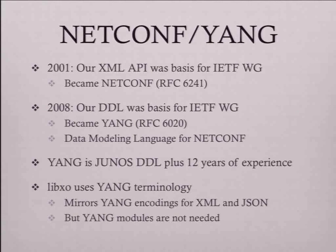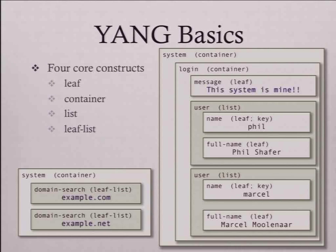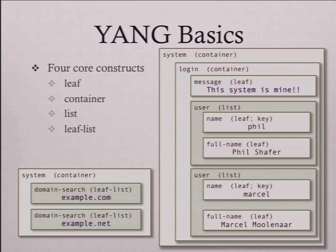A couple years ago I was talking to Simon and we came up with this idea. We took the XML API in Junos and the data modeling language to the IETF, and they became standards. NetConf is the API, and Yang is the modeling language that defines what goes into that API. LibXO uses that terminology from Yang, and it also makes XML encodings and JSON encodings compatible with Yang XML and JSON encodings.